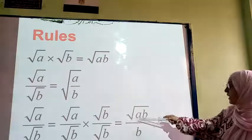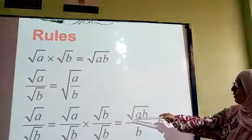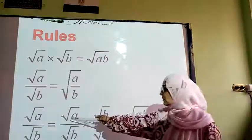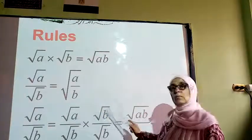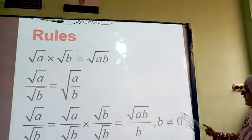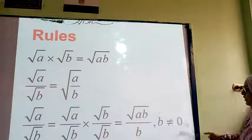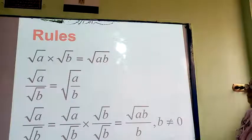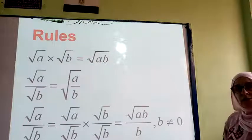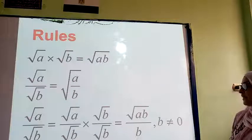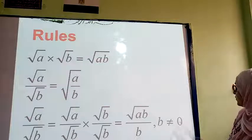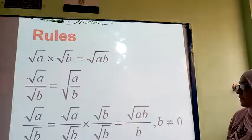For the denominator, I am going to end up with root(2×5). There is a condition here that b does not equal 0 because we know that we cannot put 0 in the root.